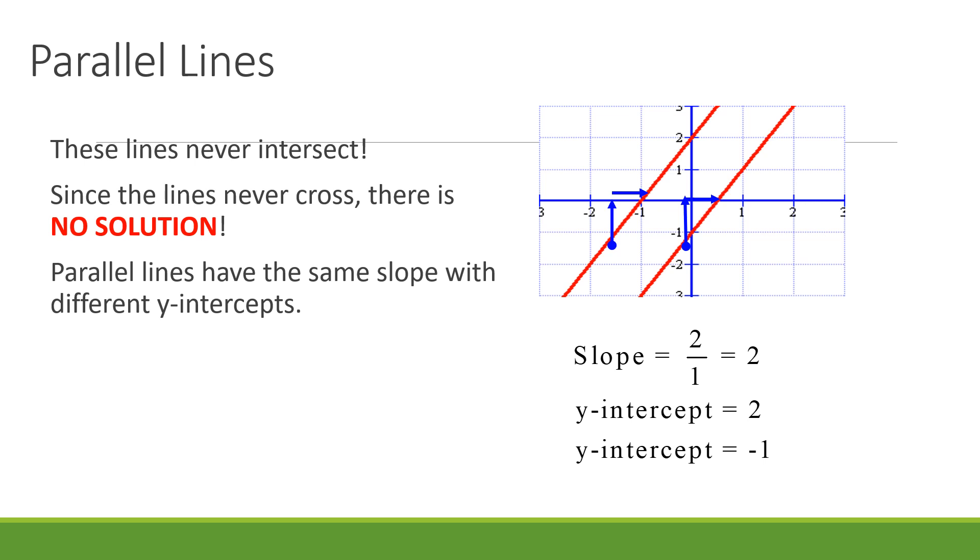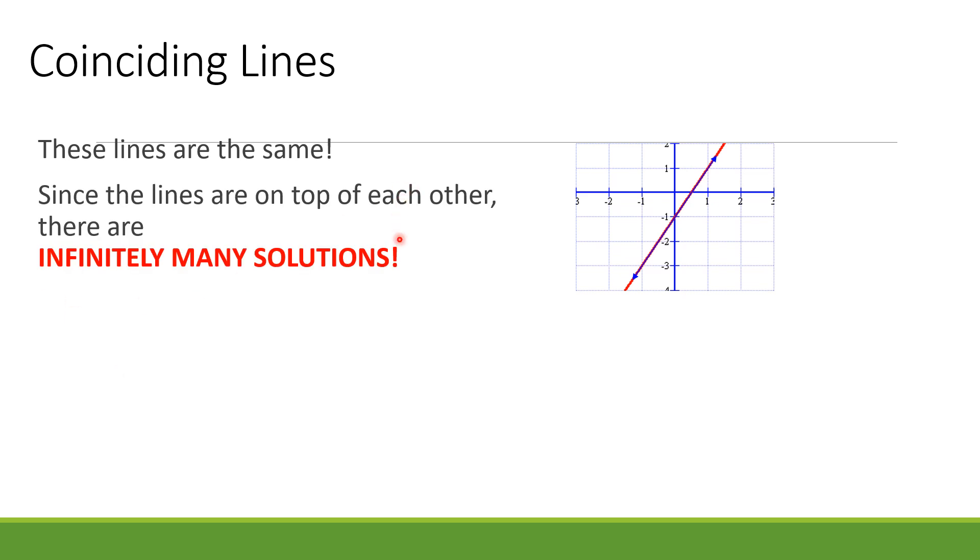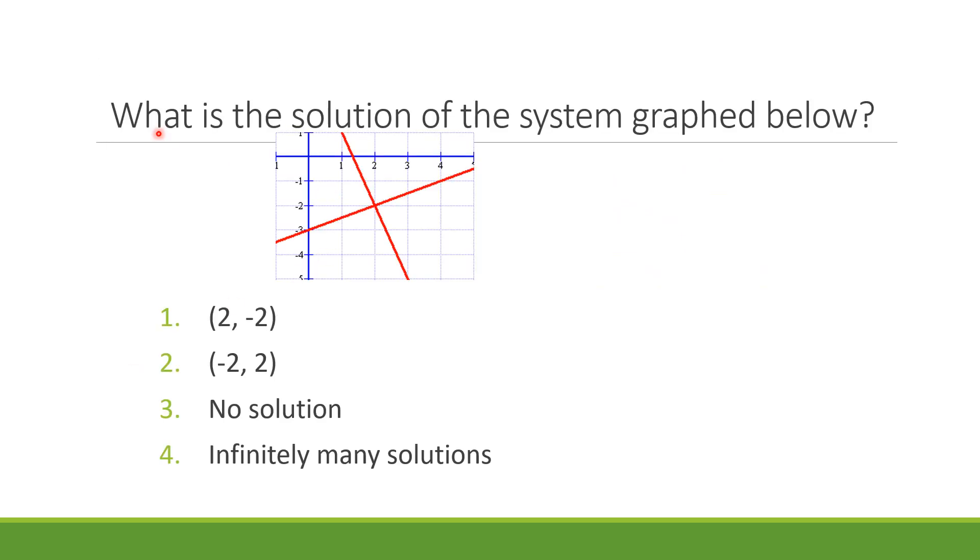Next, we have coinciding lines. These are two lines that coincide with one another - there are two lines there that become one. These lines are the same, and since the lines are on top of each other, there are infinitely many solutions. Coinciding lines have the same slope and the same y-intercept.